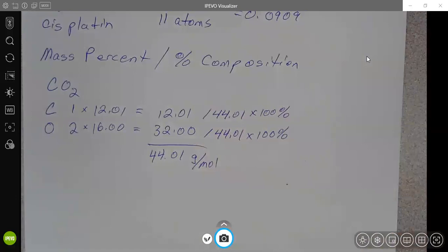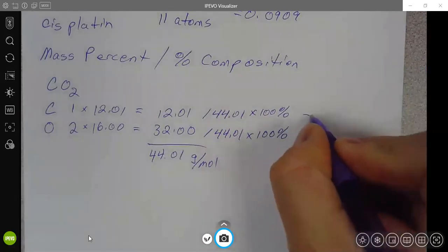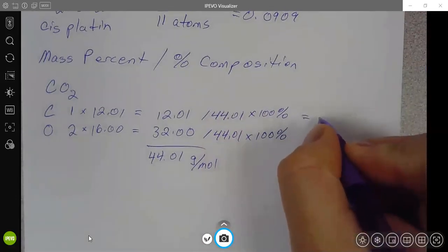And I'll show you on the next example how you could combine those. So from here, then you would plug into your calculator and you can plug in 12.01 divided by 44.01 times 100. And again, four sig figs here would be appropriate.